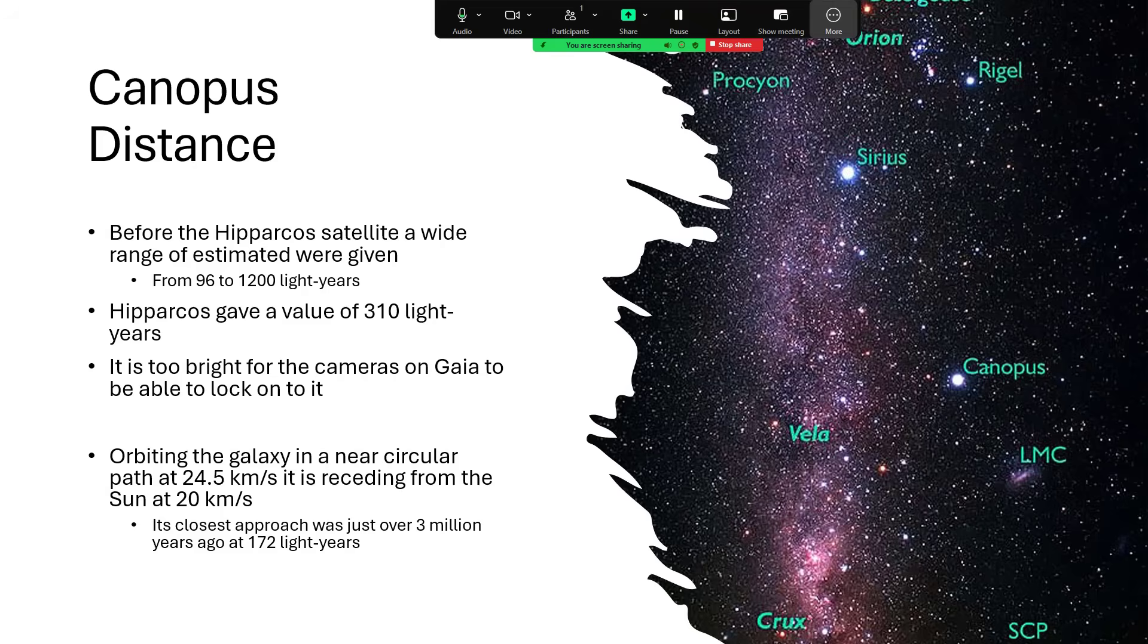And if you run the clock backwards about 3 million years, it would have been much closer. At its closest approach, it would have been 172 light years away. So it's nearly doubled that distance in the last 3 million years, and it's beginning to get away from us.